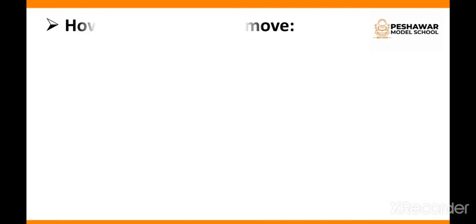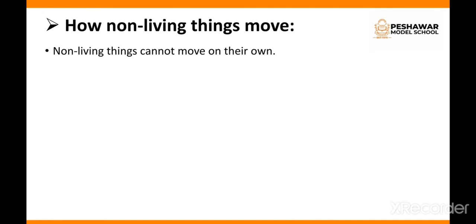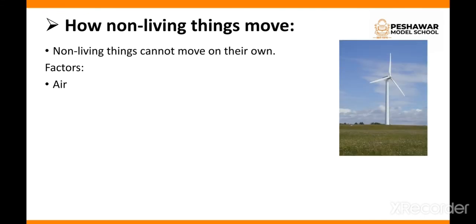Now we will see how non-living things move. Non-living things cannot move on their own — they move due to certain factors. One factor is air. For example, a windmill cannot move on its own; the force of wind makes the windmill work. Wind acts as the force for the windmill.